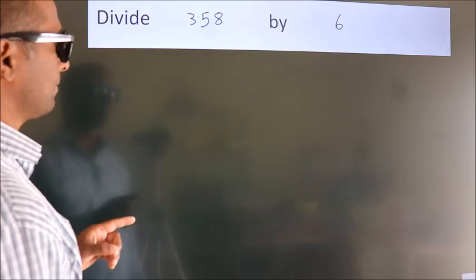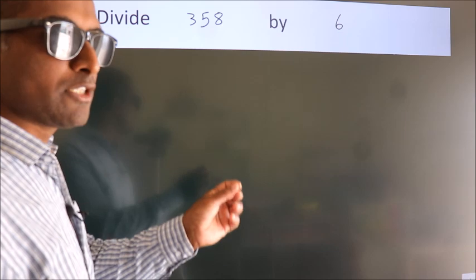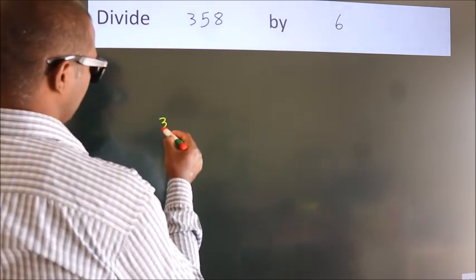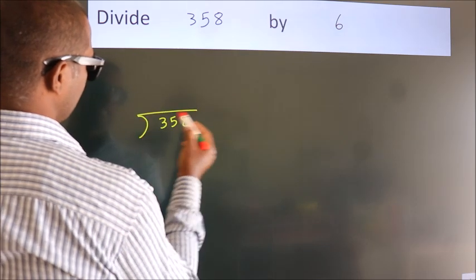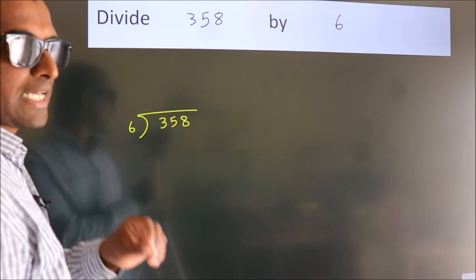Divide 358 by 6. To do this division, we should frame it in this way: 358 here, 6 here. This is your step 1.